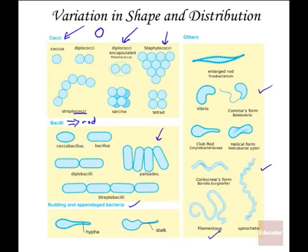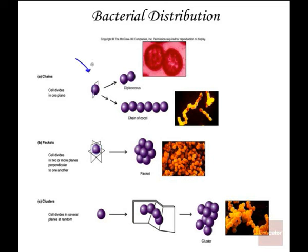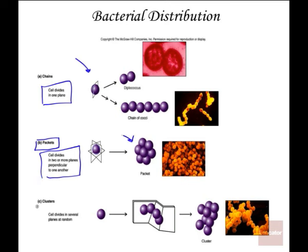All of these forms help to name bacteria — some are named according to their shape and arrangement. Bacteria are arranged based on how they reproduce. Chains form when cell division occurs in one plane. Division in perpendicular planes forms symmetrical packets. More random division in various planes produces clusters.